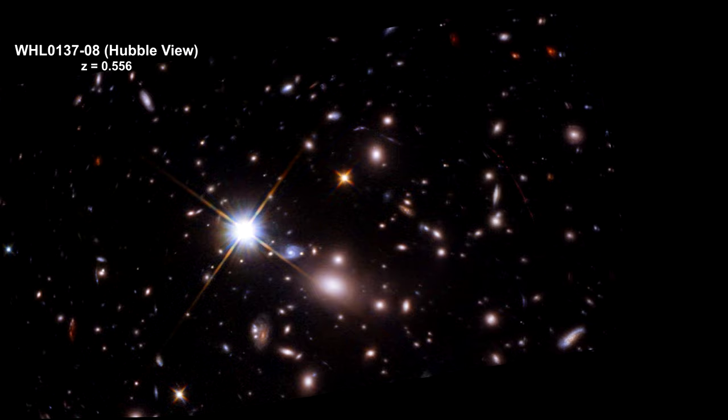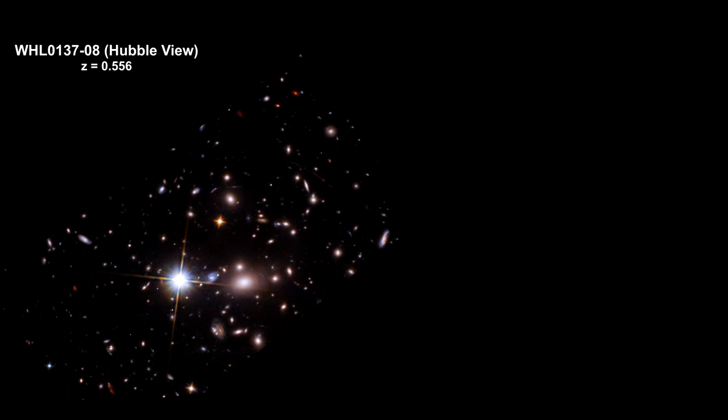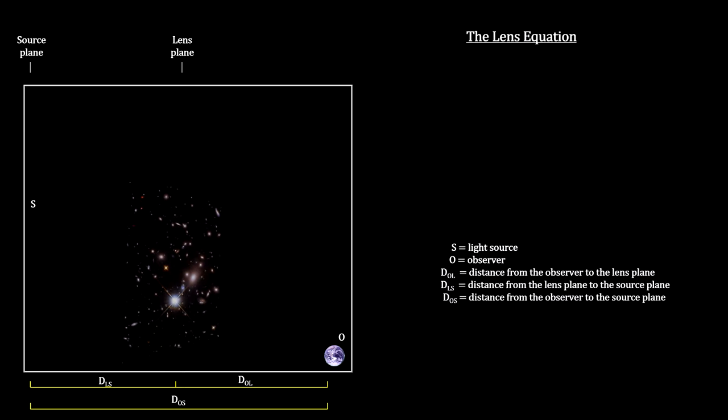To illustrate the basic geometry of gravitational lensing, we'll use the giant galaxy cluster WHL0137-08 lensing of the sunrise arc. Here's the basic geometry of gravitational lensing.